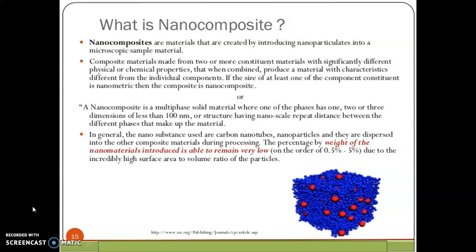In other words, a nanocomposite is a multiphase solid material where one of the phases has one, two or three dimensions of less than 100 nanometers. So, it gives clear picture. So, multiphase solid material when you are adding one or two dimensions. That means, when you are adding the material, the dimension of the particular material is less than or any side is less than the nanometers.